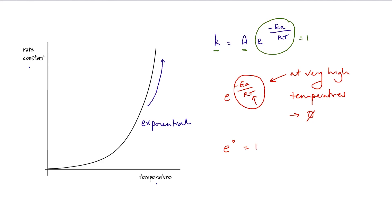This is all theoretical, because in reality when we get to the kinds of temperatures needed for minus Ea over RT to approach zero, the temperature is so high that our reactants are pretty much dissociated into atoms. As useful as our Arrhenius equation is, it's actually far more useful if we linearise it.